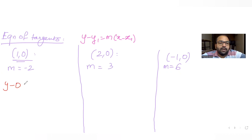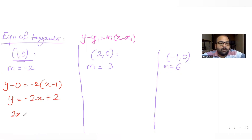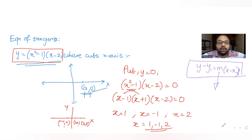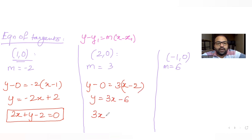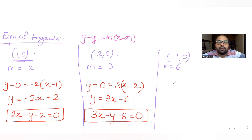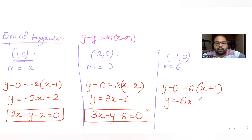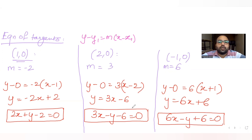The first equation of the tangent is y equals minus 2x plus 2, which gives 2x plus y minus 2 equals 0. For the second coordinate 2 comma 0 with slope 3: y minus 0 equals 3 times x minus 2, giving y equals 3x minus 6, so 3x minus y minus 6 equals 0. For the third coordinate minus 1 comma 0 with slope 6: y equals 6 times x plus 1, giving 6x minus y plus 6 equals 0.